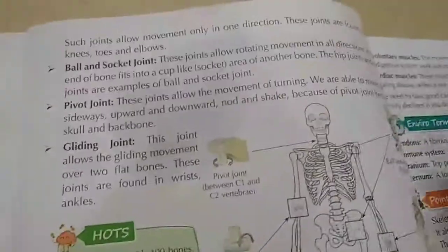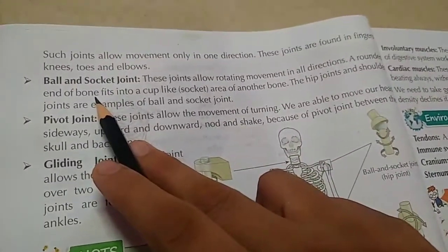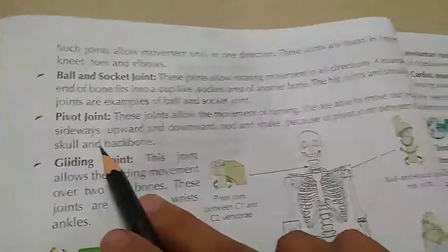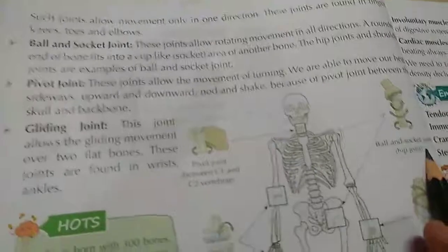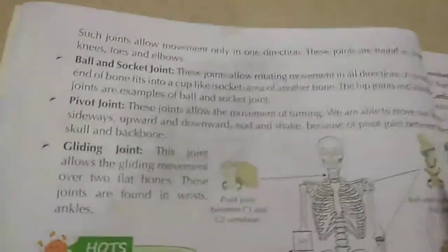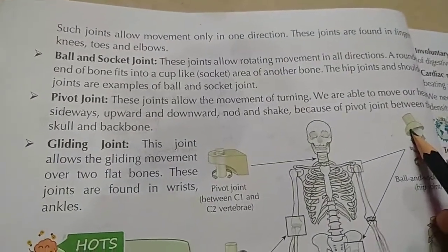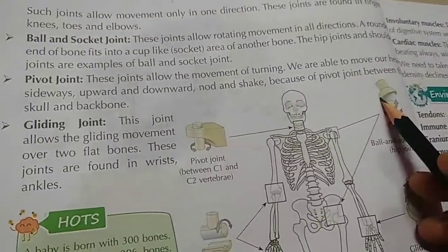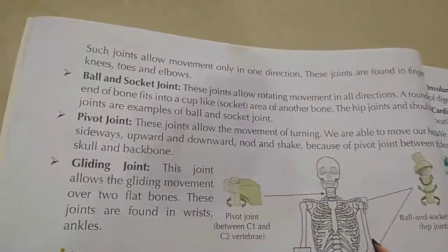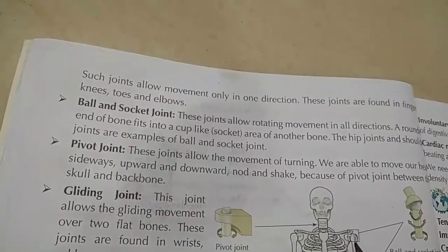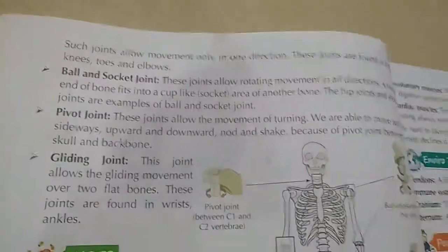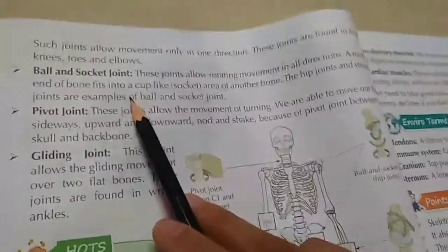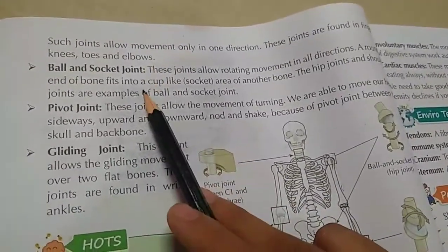The ball and socket joint allows rotation movement in all directions. In this joint, one bone works like a ball and the other like a socket, and they move freely. This joint can be found in the shoulder and the hip, allowing movement in all directions.